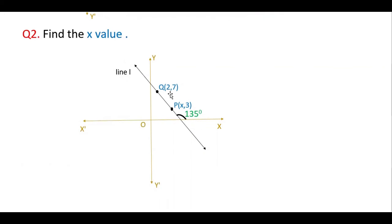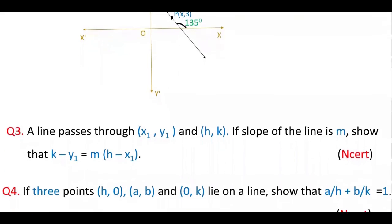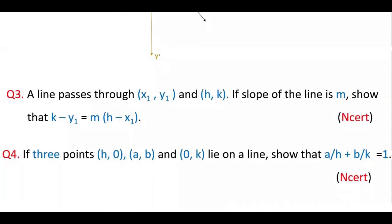Here you have to equal the slope to tan 135 degrees, so find tan 135 and set it equal to this slope, then you will get the x value. These two questions are from NCERT. In this case you have to find the slope between these two points and from these points, then equate those slopes, and you will get the result: a by h equals a by k, which simplifies to a by h plus b by k equals 1.